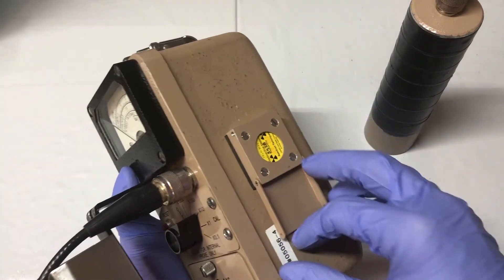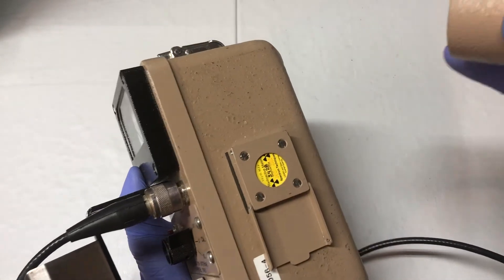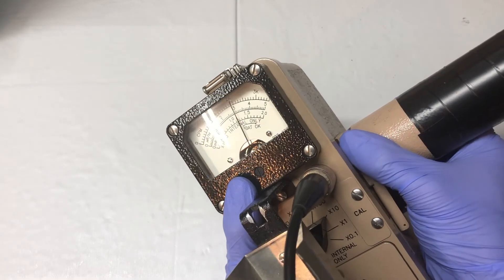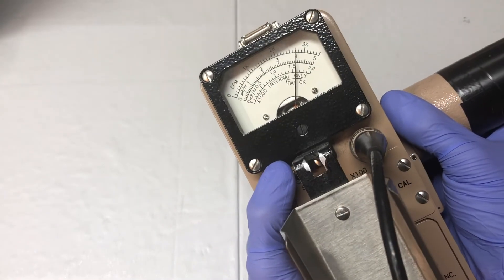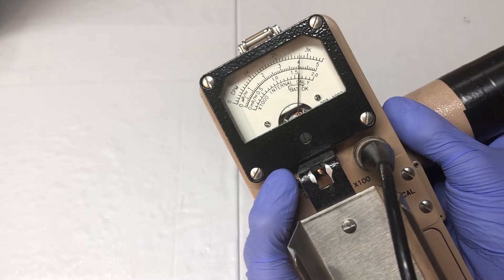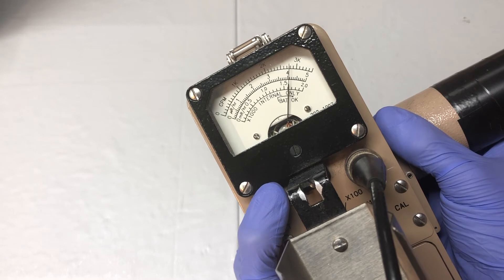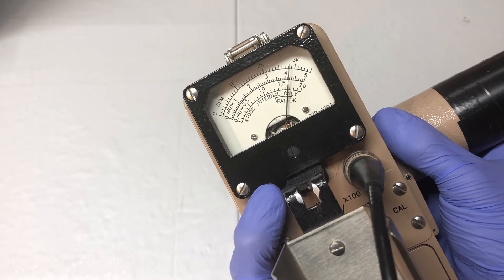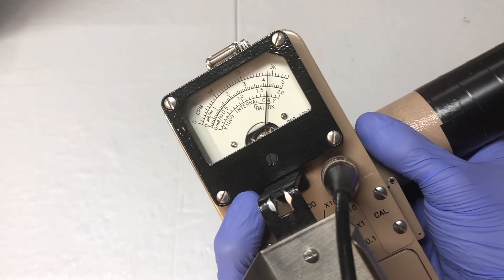And for last, let's check the beta-gamma cesium-137 on the side. Reading a little bit less than 30,000 counts per minute.